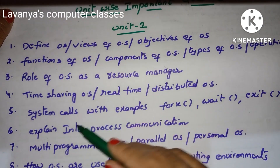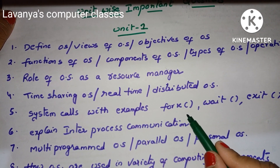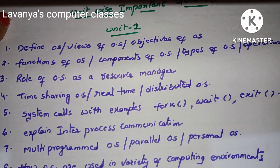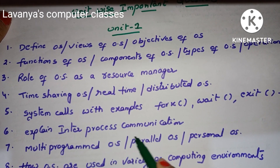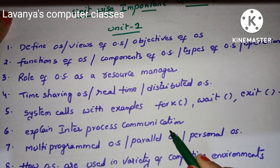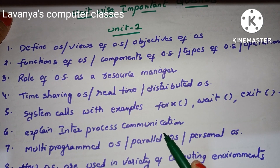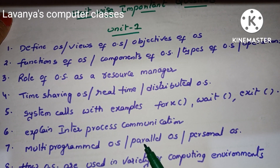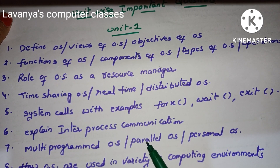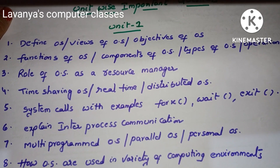Next one is explain system calls with examples — like fork function, wait function, exit function. Next, explain inter-process communication — very very important question. All these questions repeatedly came in the university examination papers. That's why don't leave any question; read all the questions. If you read all the questions, it is very easy to write the OS paper.